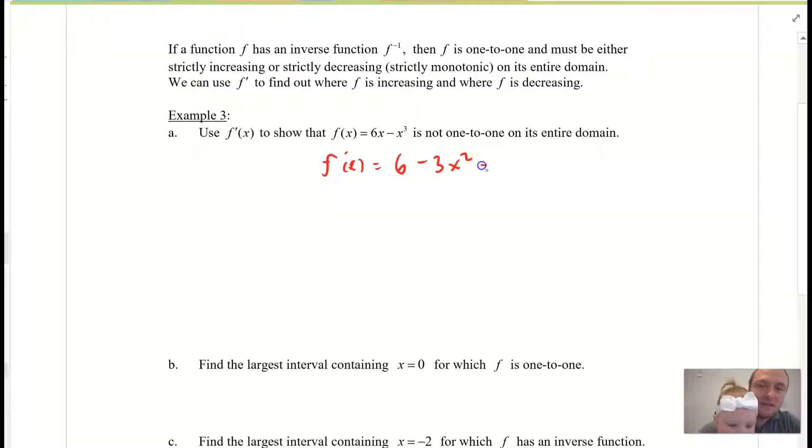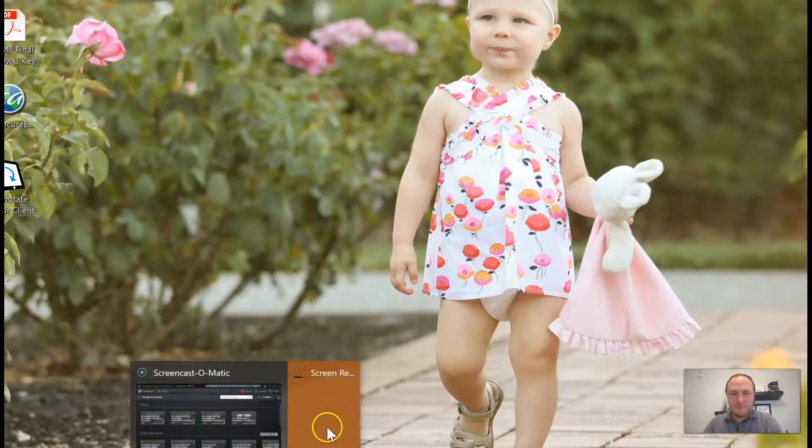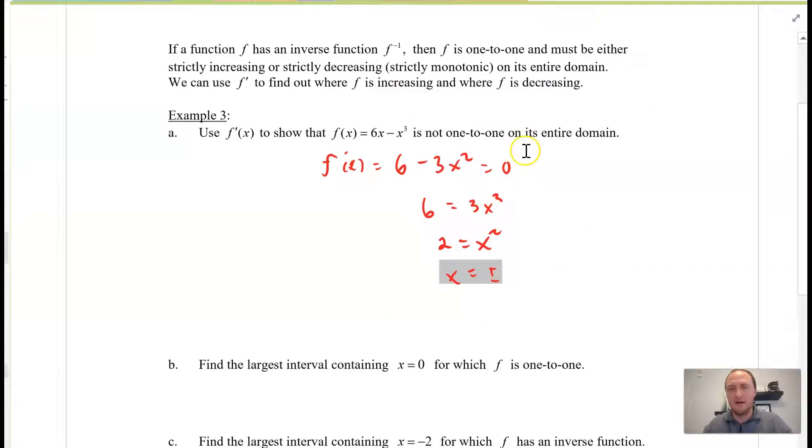Okay. Okay. And we're going to set this equal to 0, which means that 6 is equal to 3x squared, which means 2 is equal to x squared, which means x is equal to, oh, don't write with that pen, babe, x equals plus or minus root 2.